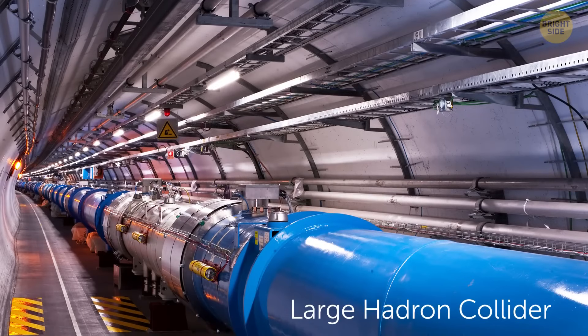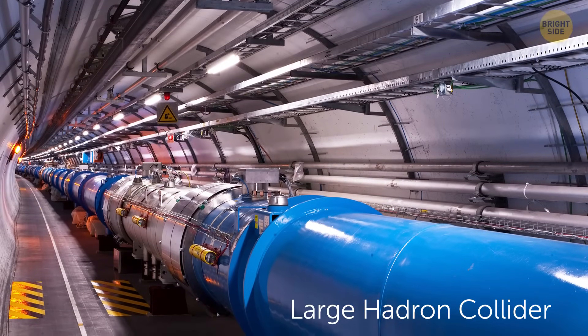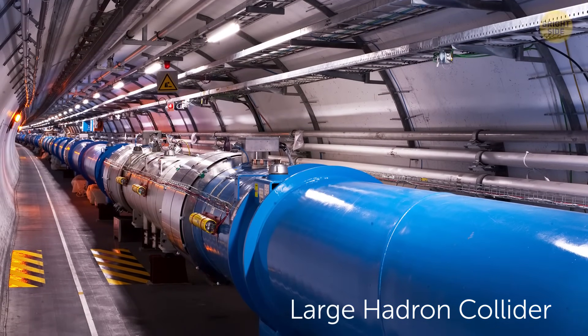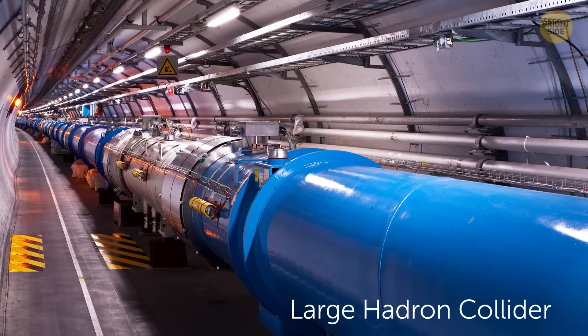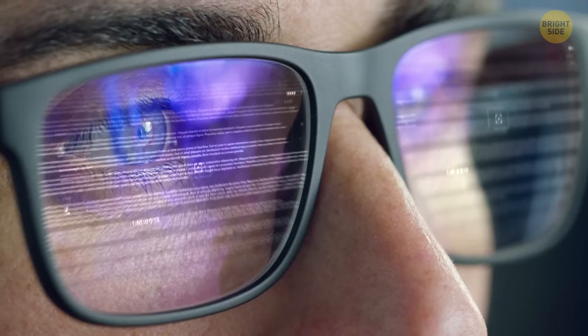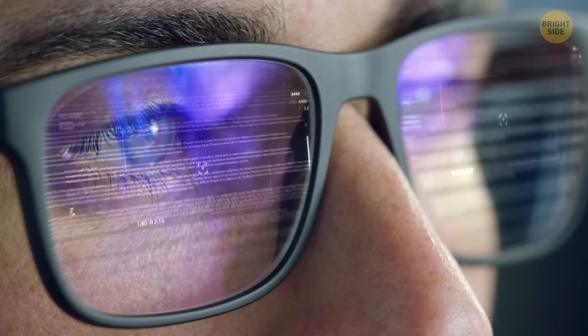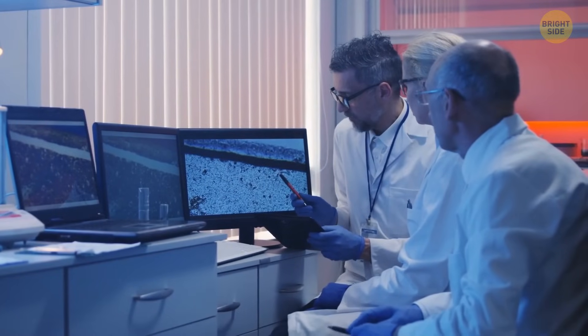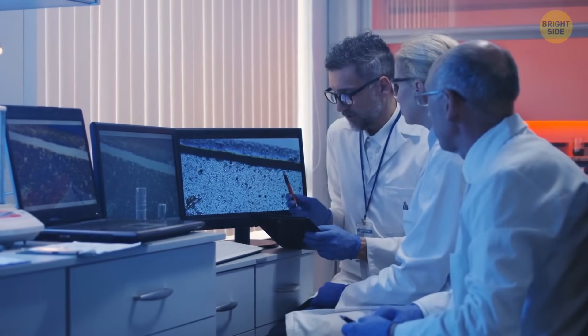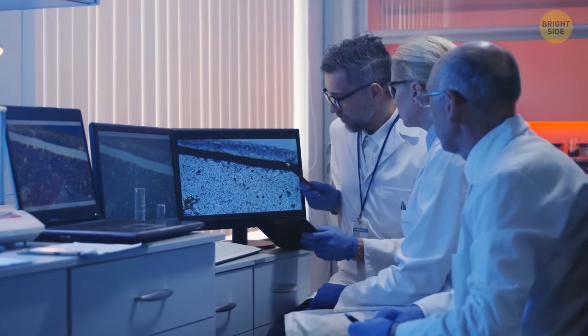They also thought that WIMPs were probably produced in just the right quantities during the Big Bang. So they tried to detect them bumping into regular matter, often placing the detectors incredibly deep underground so that those annoying cosmic rays don't mess things up. But after 40 years of research, they found nothing. And that's when they realized that dark matter particles are probably not heavier, but the other way around, much lighter than any other.